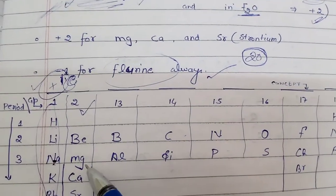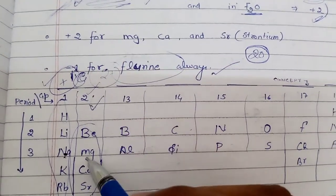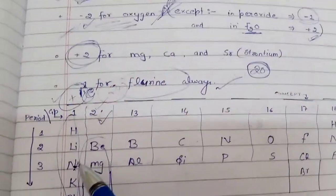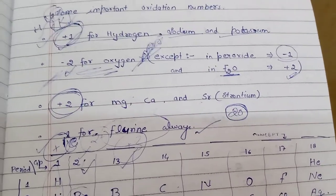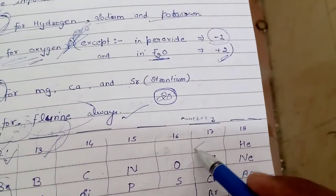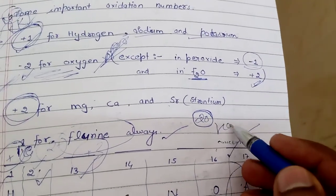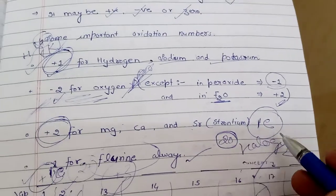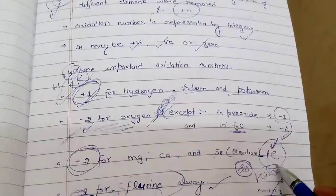In Group 2, we have beryllium, magnesium, calcium, strontium - all of these have two electrons in the positive side, so their oxidation number will be plus 2. Group 13 elements will be plus 3. For Group 17 - fluorine, chlorine, bromine - these are halogens. Halogens need to gain one electron to complete their outer shell, so their oxidation number is minus 1.